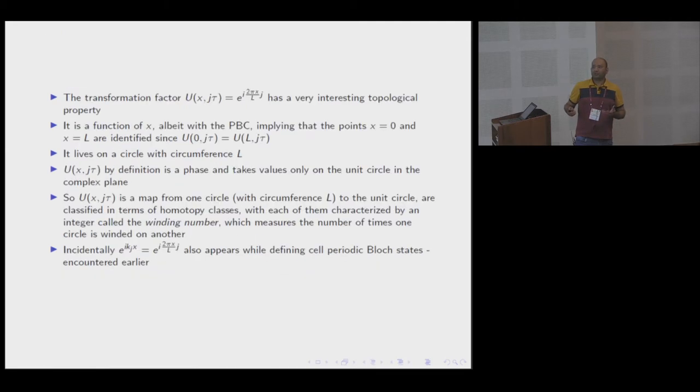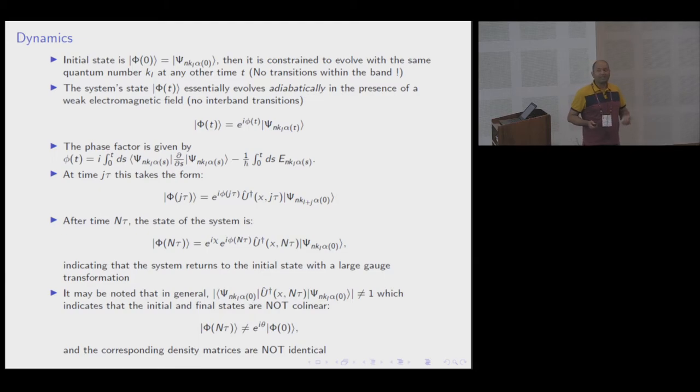This was the kinematics of the problem. Now we get to the dynamics. We assume that at some time t, there was no flux impinging on the sample. The system was prepared in some band n with some KL value of momentum. We slowly apply the magnetic field. There cannot be any transitions within the band because k is a good quantum number. You can't move inside the band, but you can move amongst the bands. We assume the field is weak enough so as not to have such transitions.